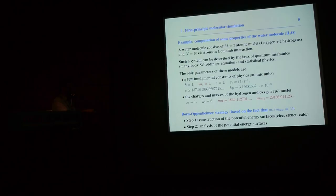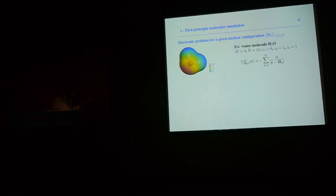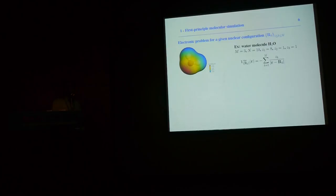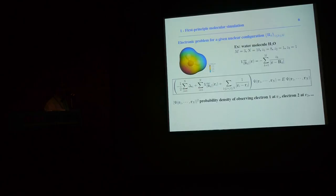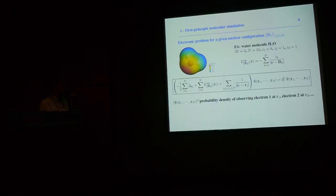Let me first focus on electronic structure calculations. In the electronic structure problem, we consider that the nuclei are clamped point-like particles, denoted by their positions in space. The goal is to compute the steady states of the N electrons in the electrostatic potential generated by the nuclei. These steady states are solutions to the N-body Schrödinger equation. The electronic Hamiltonian includes a term for the kinetic energy of the electrons, a term for the nucleus-electron interaction, and a term for the electron-electron interaction.